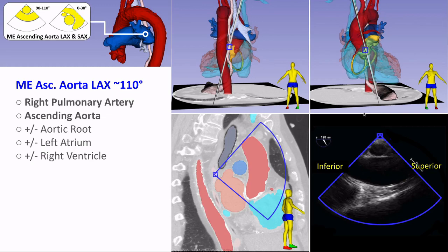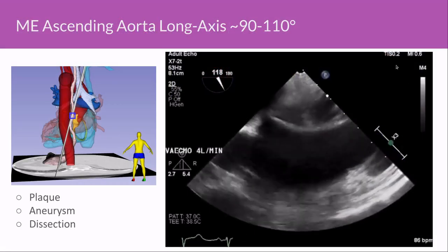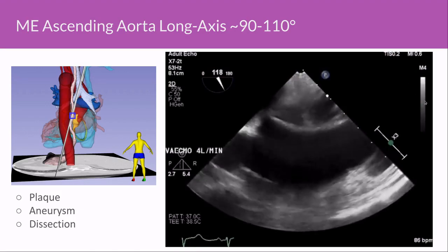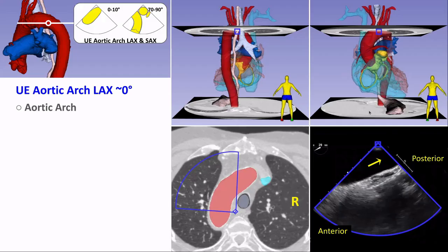The long axis view of the ascending aorta from the mid-esophagus shows the right pulmonary artery in short axis and the ascending aorta in long axis — a good view for detecting atheromatous disease in the ascending aorta. As you pull the probe up further, you go through the blind spot behind the left main stem bronchus. Going past the blind spot, you come upon the arch, and at zero degrees you have the aortic arch long axis view, where you can assess arch flow, potential dissection, or dilation.